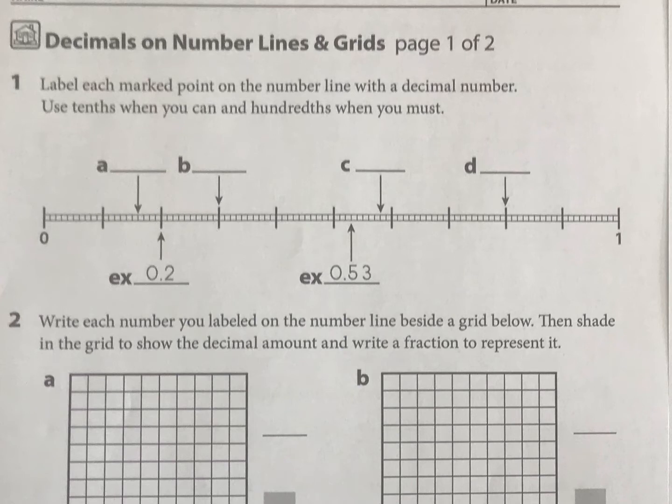And then the smaller marks, you can count them if you really want to, but there are 100 of these, 10 for each section. So those are your hundredths.